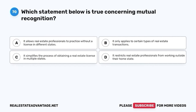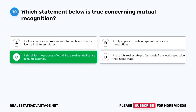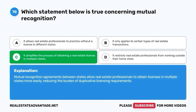Question 70. Which statement below is true concerning mutual recognition? A. It allows real estate professionals to practice without a license in different states. B. It only applies to certain types of real estate transactions. C. It simplifies the process of obtaining a real estate license in multiple states. D. It restricts real estate professionals from working outside their home state. The correct answer is C. It simplifies the process of obtaining a real estate license in multiple states. Mutual recognition agreements between states allow real estate professionals to obtain licenses in multiple states more easily, reducing the burden of duplicative licensing requirements.